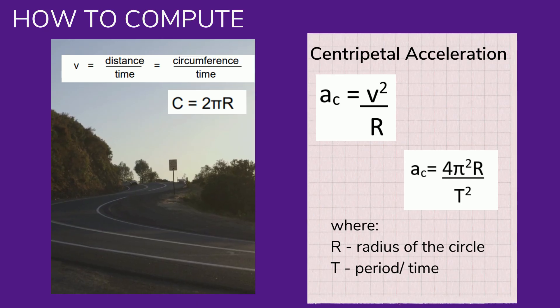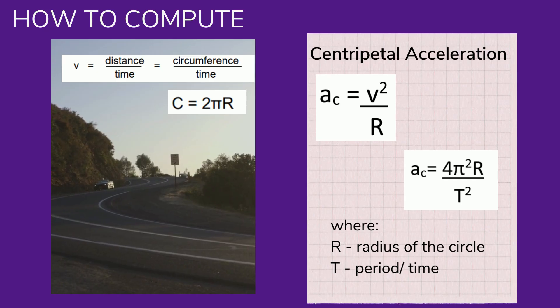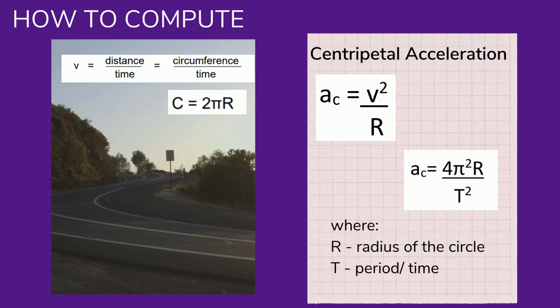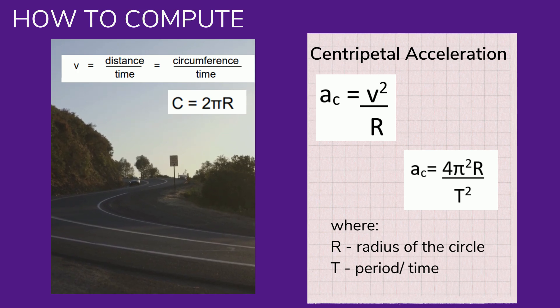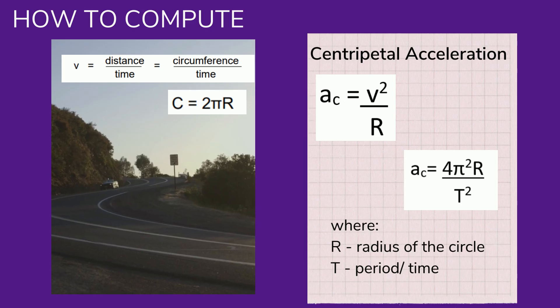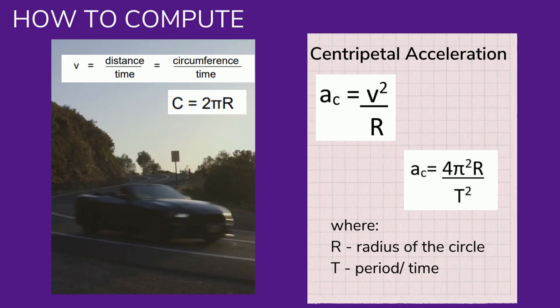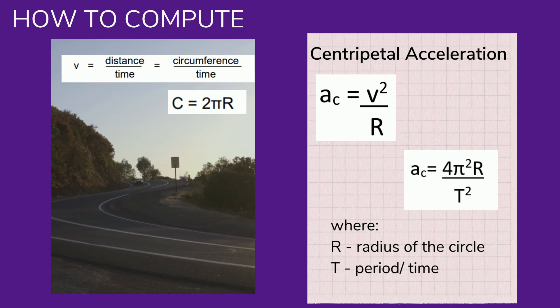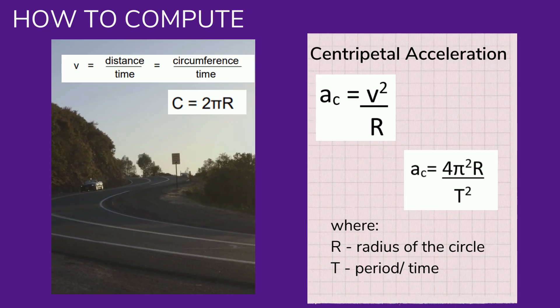This acceleration is directed towards the center of a circle and called centripetal acceleration. The acceleration of an object moving in a circle can be determined by either of these two equations: ac = v²/R or ac = 4π²R/T², where R is the radius of the circle and T is the period or the time.